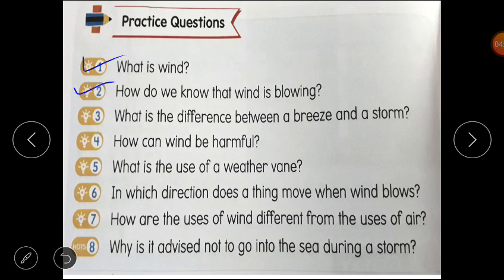Next question is question number 2. How do we know that wind is blowing? We feel air when it moves. When air moves, it moves things around us like our clothes, leaves of trees, feathers and sometimes flowers.